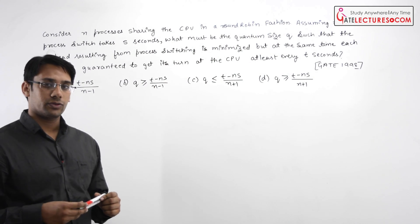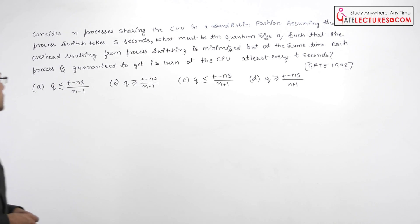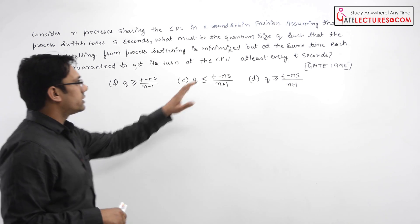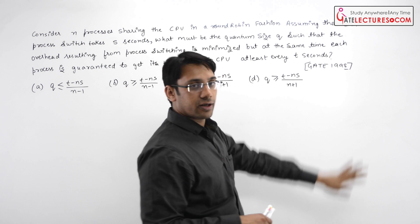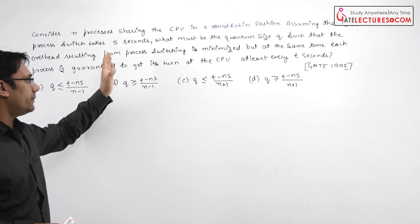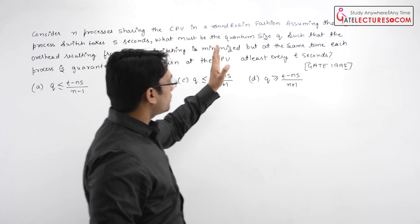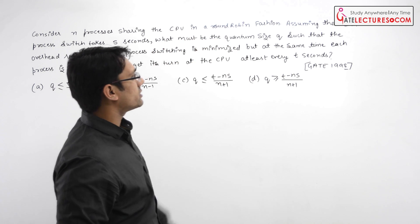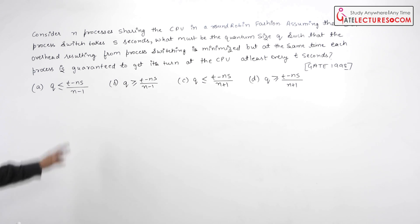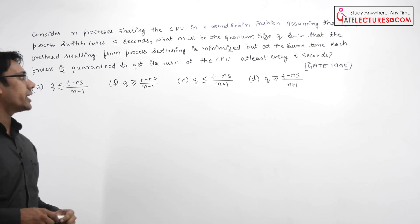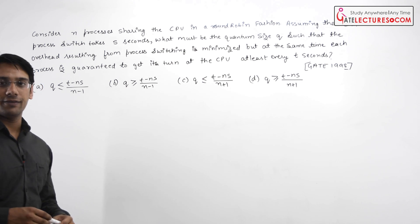This question was asked in 1998. Let us read the question first. Consider N processes sharing the CPU in the round robin fashion — that means we are using a round robin algorithm. Assuming that each process switch takes S seconds, what must be the quantum size Q such that the overhead resulting from the process switch is minimized, but at the same time each process is guaranteed to get its turn at the CPU at least every T seconds.